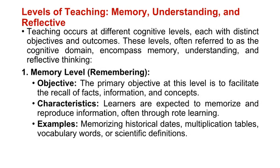Let us discuss various levels of teaching — memory, understanding, and reflective. Teaching occurs at different cognitive levels, each with distinct objectives and outcomes. These levels, often referred to as the cognitive domain, encompass memory, understanding, and reflective thinking. 1. Memory level — remembering. Objective: the primary objective at this level is to facilitate the recall of facts, information, and concepts. Characteristics: learners are expected to memorize and reproduce information, often through rote learning. Examples: memorizing historical dates, multiplication tables, vocabulary words, or scientific definitions.